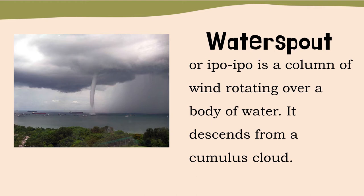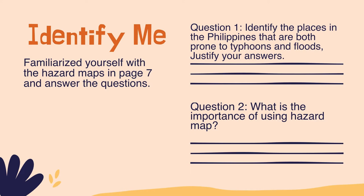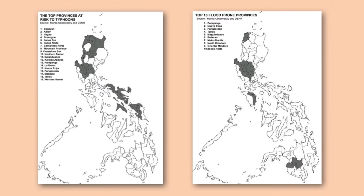Now it's activity time. Turn your modules to page 8 and read Activity 3, Identify Me. What you are going to do is simple: familiarize yourself with the hazard maps found on page 7 of your module and answer the given questions. First, identify the places in the Philippines that are both prone to typhoons and floods, and justify your answers. Question number 2: What is the importance of using hazard maps? The shaded portions of the map indicate areas which have higher risk to typhoons, and the numbers in the shaded portions correspond to the listed provinces on the left side of the map.